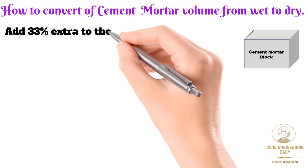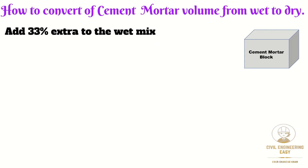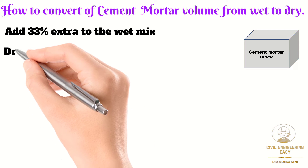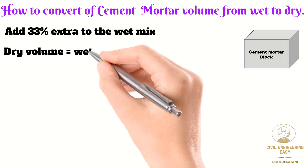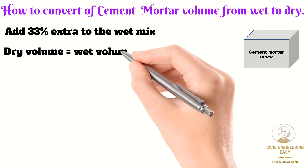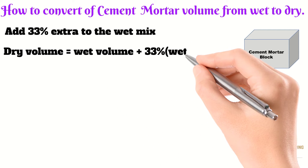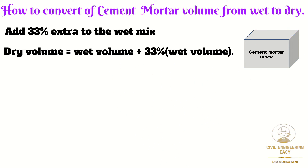For cement mortar, we have to add 33% extra to the wet mix. The formula to calculate the dry volume of cement mortar is: dry volume of cement mortar equals the wet volume of cement mortar plus 33% of the wet volume. Now, if we need the quantity in dry volume on site, let's solve a short numerical example.